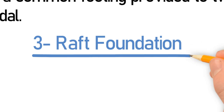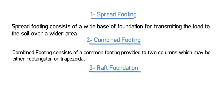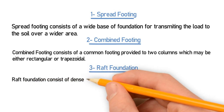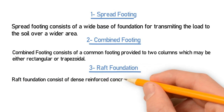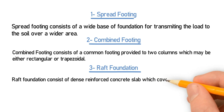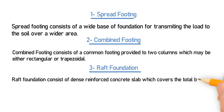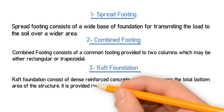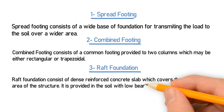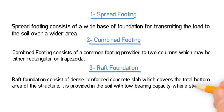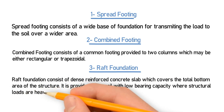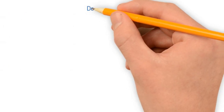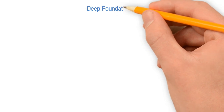The third type is raft foundation. Raft foundation consists of a dense reinforced concrete slab which covers the total bottom area of the structure. It is provided in soil with low bearing capacity where structure loads are heavy. So we use raft foundation mostly where the soil has low bearing capacity and structure load is very high.